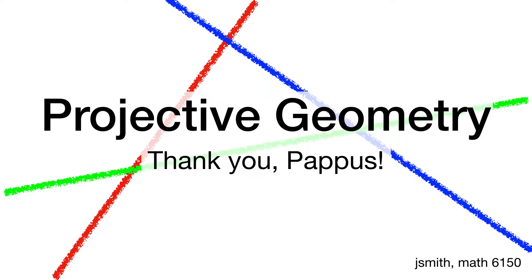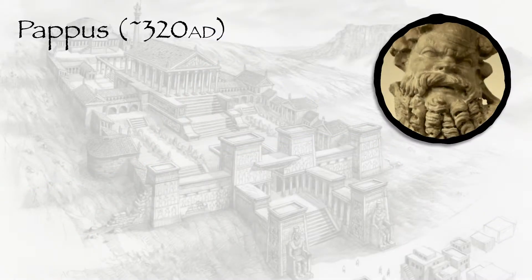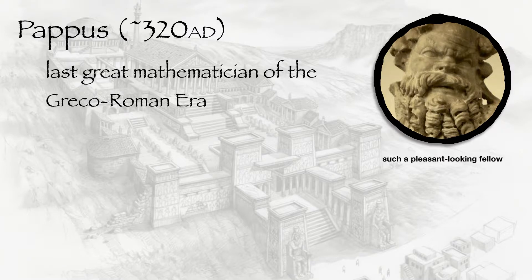This video highlights the contributions of a lesser-known but extremely important mathematician named Pappas. One of the few facts known about Pappas was his birth in Alexandria, Egypt, home to the most famous library of ancient times, although it's likely that the physical library of Alexandria was destroyed prior to Pappas's birth.